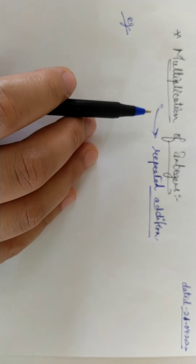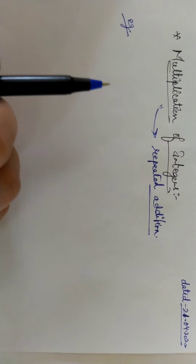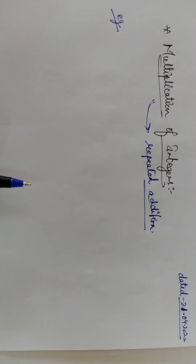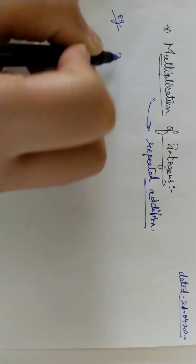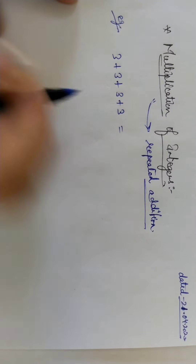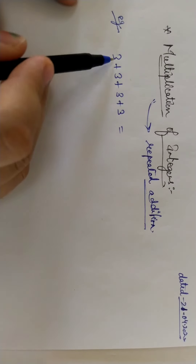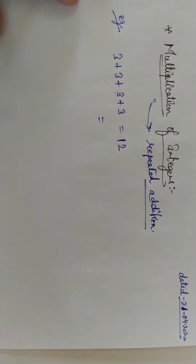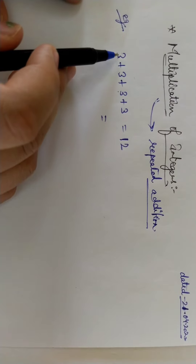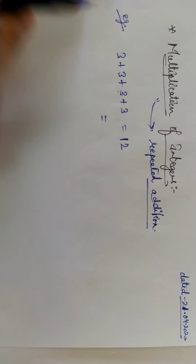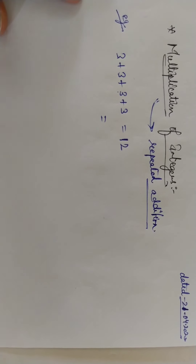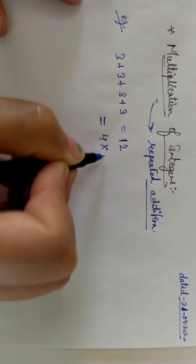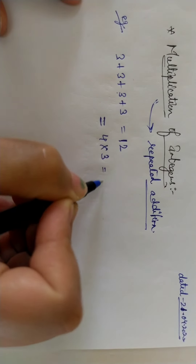Multiplication is repeated addition. Taking a very simple example: if you have 3 plus 3 plus 3 plus 3, you get 3+3=6, 6+3=9, 9+3=12. What you are doing is adding 3 four times — repeated addition. It means in the form of multiplication it can be written as 4 times 3.